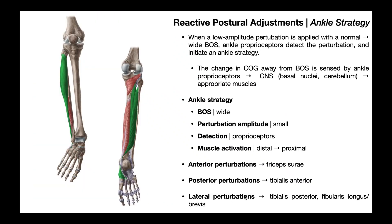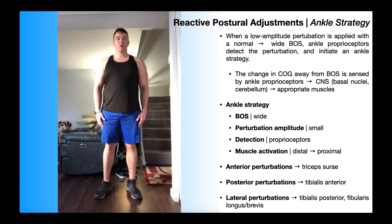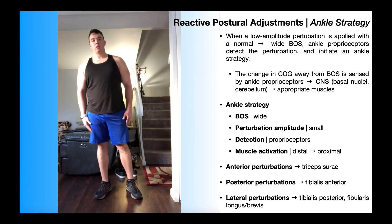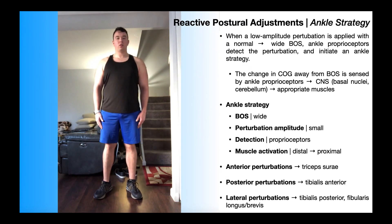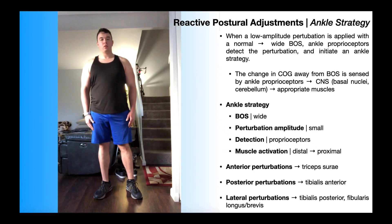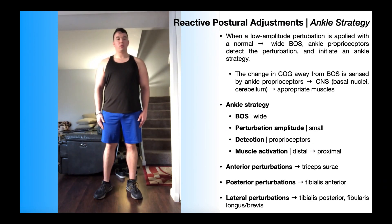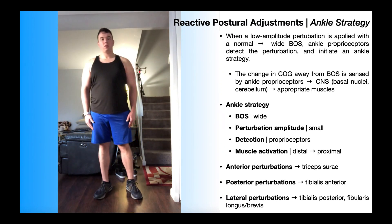Lateral perturbations are ones where the center of gravity shifts either left or right, and the muscles that mainly activate are those controlling the subtalar joint — tibialis posterior, fibularis longus (shown in green), and fibularis brevis (shown in red). In a lateral ankle strategy example shown, the center of gravity shifts right, with these muscles working eccentrically first to slow down the movement and then concentrically to bring back to the original position.